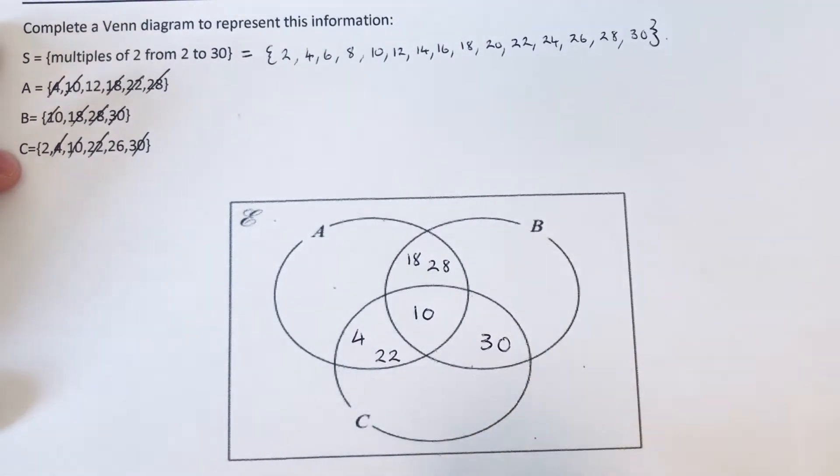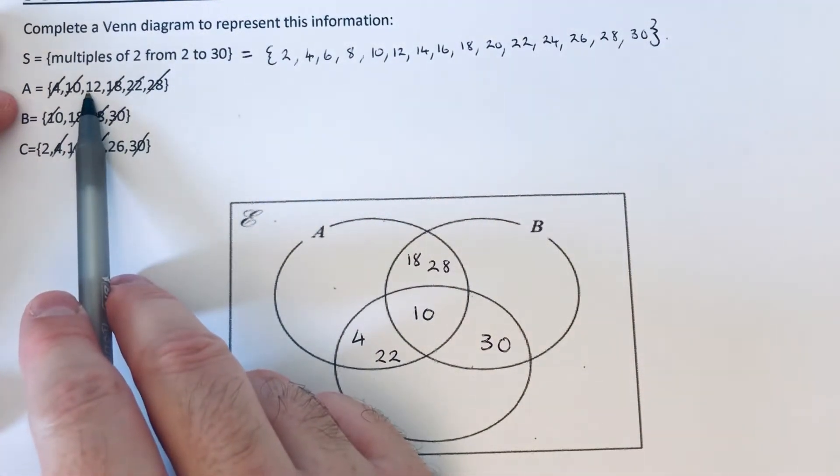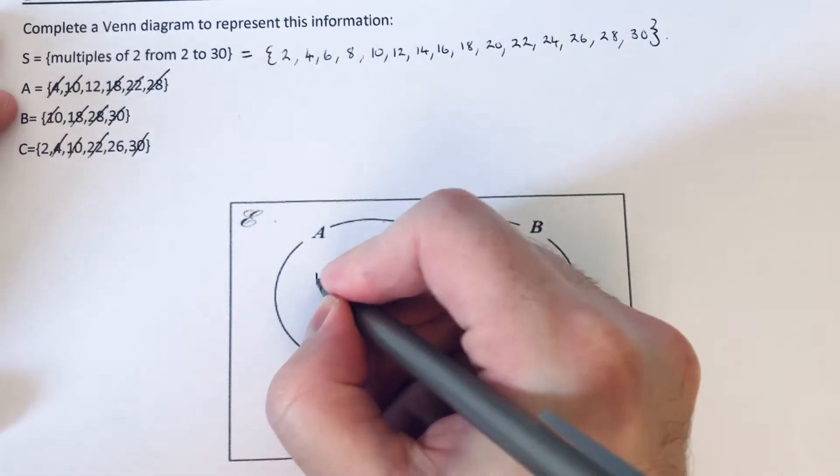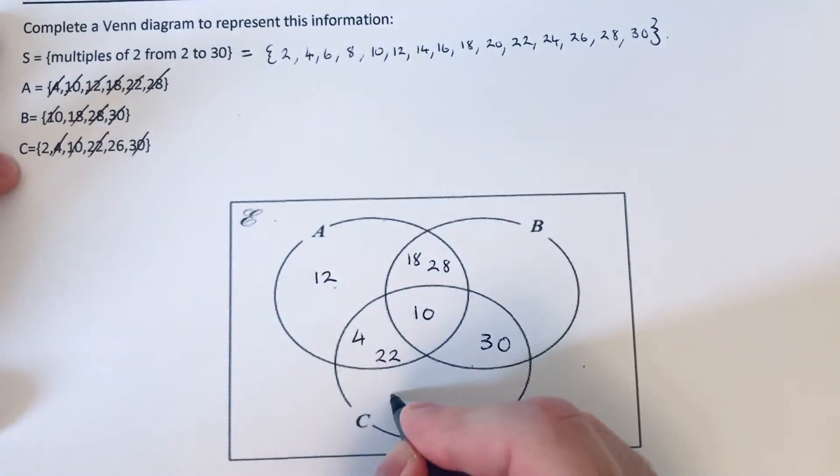Okay, so we just need to now do the remaining sets. So these are the bits which are only in individual sets. The numbers that are left from A: we have 12. The numbers that are left in B: we don't have any. And the numbers left in C are 2 and 26.